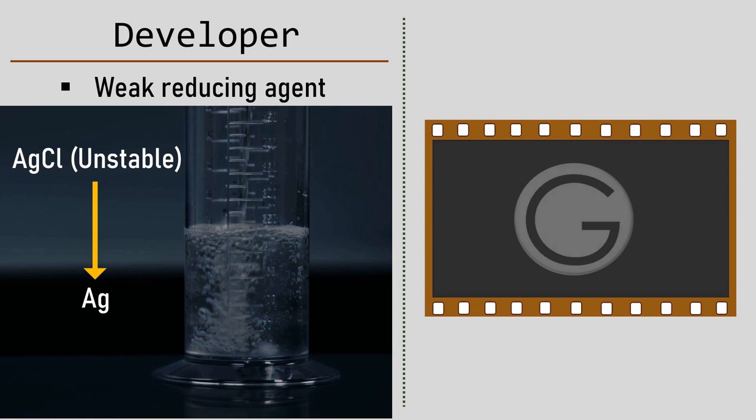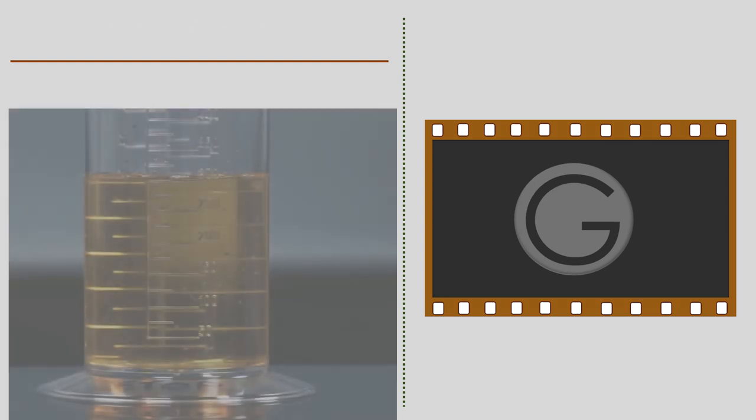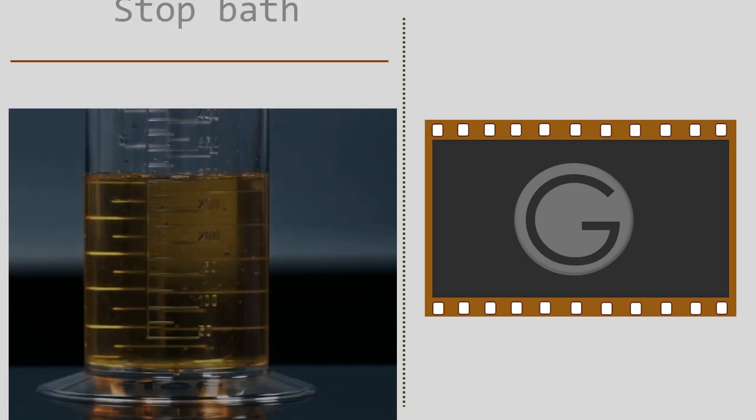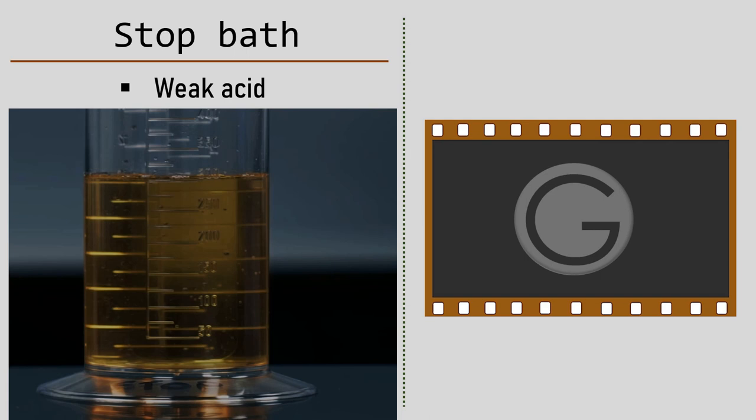But here we have a problem. If the film remains in the developer solution for long, it starts reducing the unaffected silver chloride as well, which can distort the image. And we need to stop that. So after the image is prominent, we take the film out of the developer solution and place it in a stop bath, which is generally a weak acid. The job of this stop bath is to stop the action of developer solution remaining on the film.